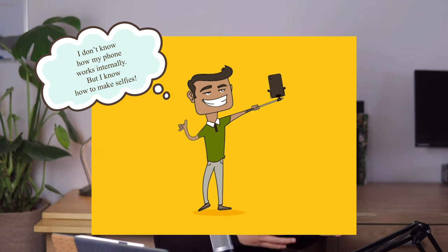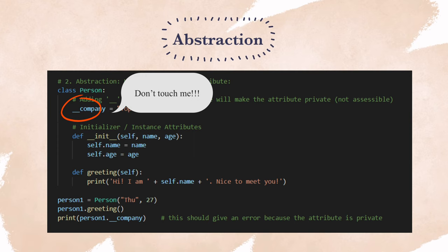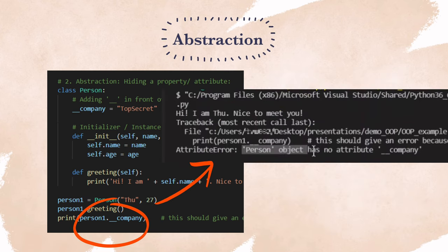The interface offers us only the relevant handles to use them, but things like chips and memory cards are hidden from us. In Python, you can hide a class attribute or an instance attribute by adding the double underscore prefix to a variable. This would give a strong suggestion not to touch the variable from the outside of the class. If we now try to access the company attribute of this person, Python would throw an attribute error saying 'person object has no attribute company.' Well, this is pretty neat, right?